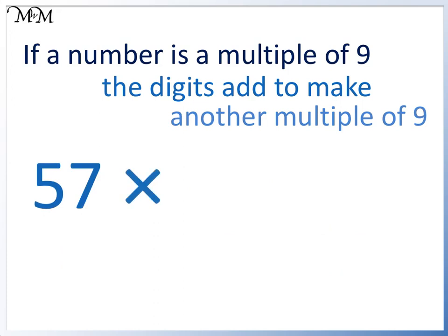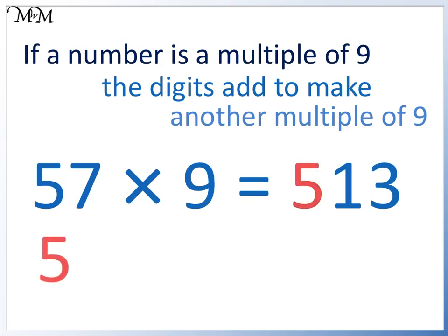57 times 9 equals 513. 5 plus 1 plus 3 equals 9. Therefore, 513 is also a multiple of 9.